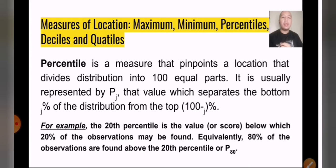So what is percentile? It is a measure that pinpoints a location that divides the distribution into 100 equal parts. It is usually represented by a letter P, which pertains to percentile. What we can see here is that there's a subscript j, but it's not a constant. I can replace that with any letter. It could be n, it could be x, it could be y, and so on and so forth.